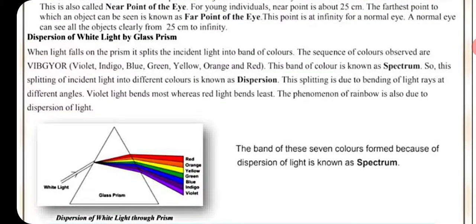When light falls on a prism, it splits the incident light into a band of colors. The sequence of colors observed are violet, indigo, blue, green, yellow, orange, and red — commonly remembered as VIBGYOR. This band of colors is known as the spectrum. The splitting of incident light into different colors is known as dispersion.